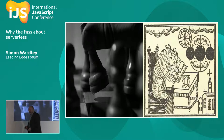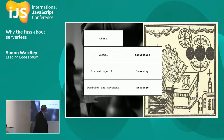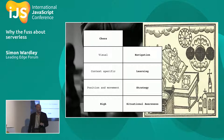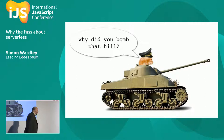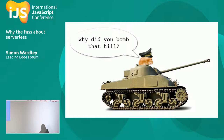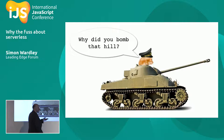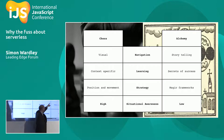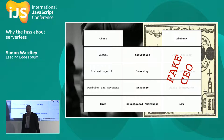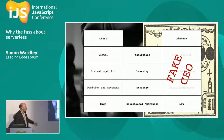Chess versus alchemy: visual navigation, context-specific learning, position-and-movement strategy — that's a high-level situational awareness environment, like the military. If you ask a general why they bombed a hill, they won't say 'because I read it in Generals Weekly' or 'because 67% of other generals are bombing hills.' It's all about position and movement. Alchemy is storytelling, secrets of success, and magic frameworks — and that's where I was as a fake CEO back in 2005. My problem: I had no maps.